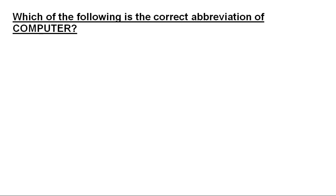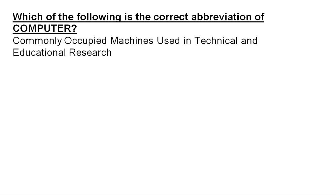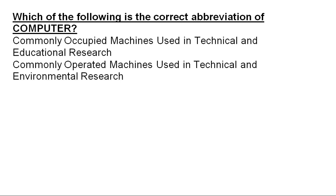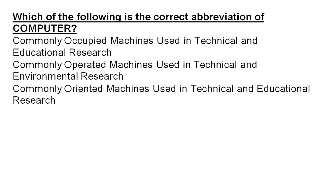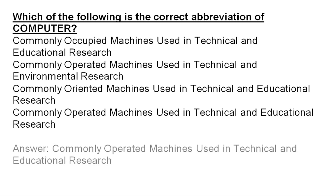Which of the following is the correct abbreviation of computer? Options include: Commonly Occupied Machine Used in Technical and Educational Research; Commonly Operated Machine Used in Technical and Environmental Research; or Commonly Operated Machine Used in Technical and Educational Research. The correct abbreviation is: Commonly Oriented Machine Used in Technical and Educational Research.